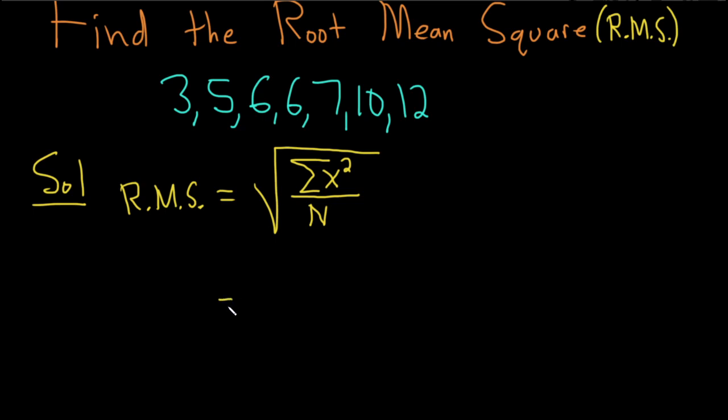So this is equal to, let's see, we have 3 squared, that's the first data point, then we have to add 5 squared, plus 6 squared, plus 6 squared, plus 7 squared, plus 10 squared, plus 12 squared.